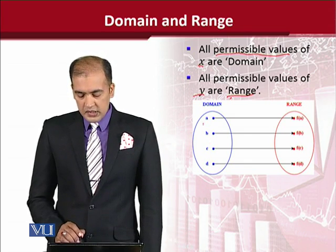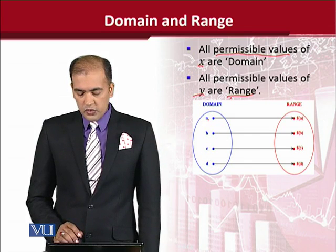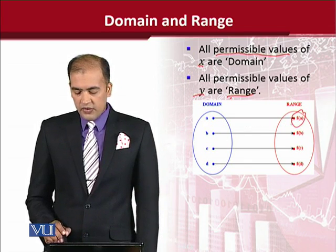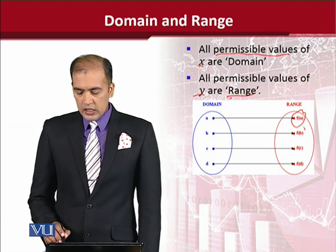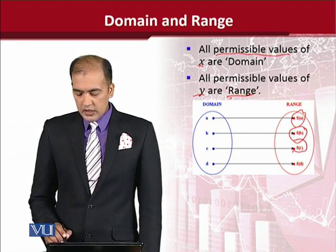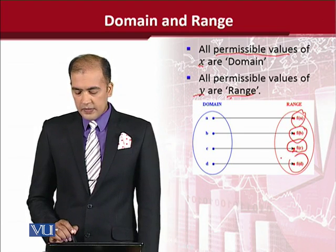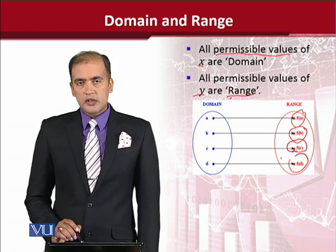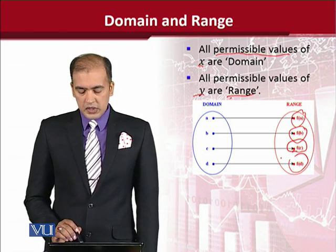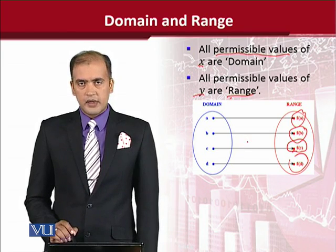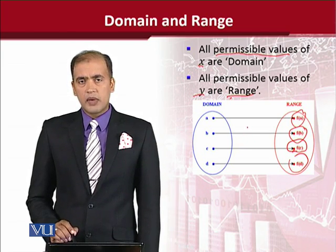Once we put a into the function, it will become f(a). Once we put b, it will become f(b). Putting the values of c and d, we will be getting f(c) and f(d). So this is how the domain and the range of a function are connected, and this is how we map them.